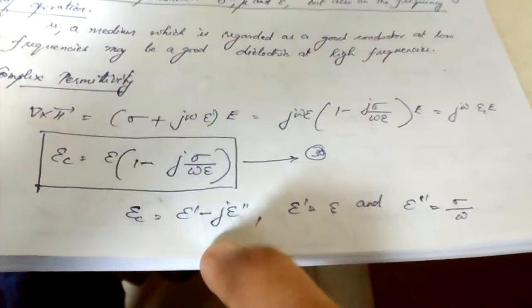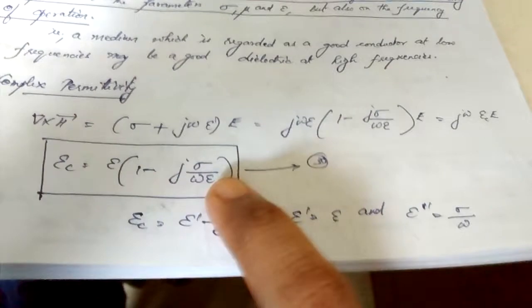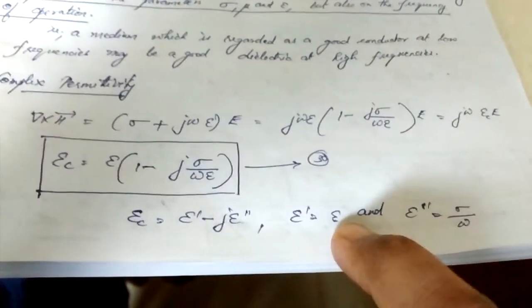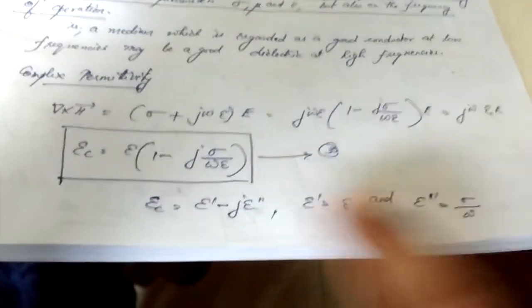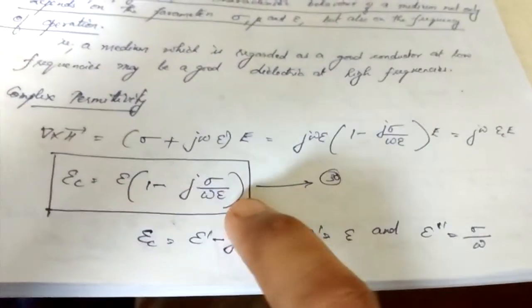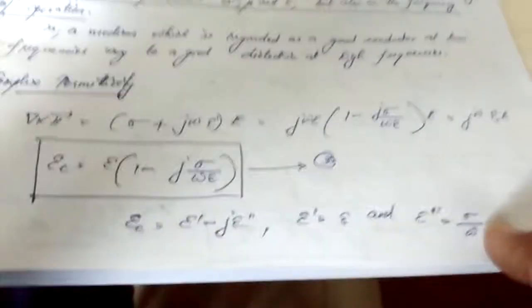Now equating the real parts, we get epsilon dash equals, from this equation number 30, you can see epsilon dash will be epsilon. And epsilon double dash, the imaginary part, will be sigma by omega.